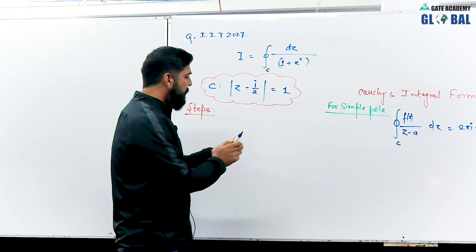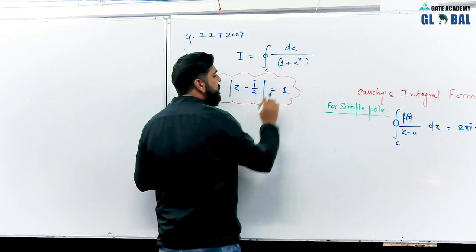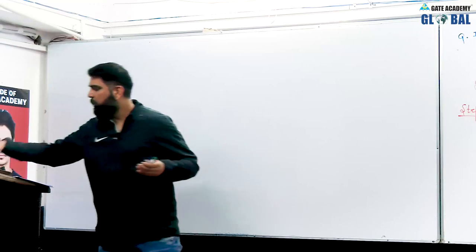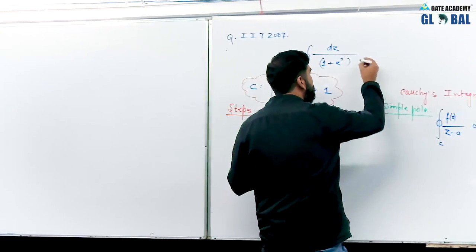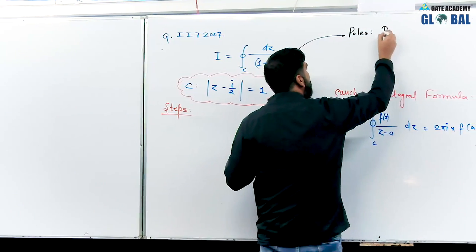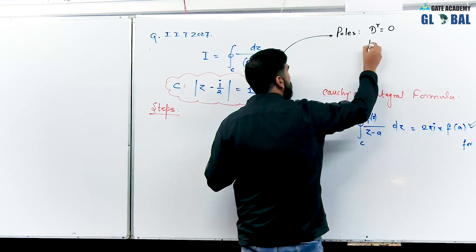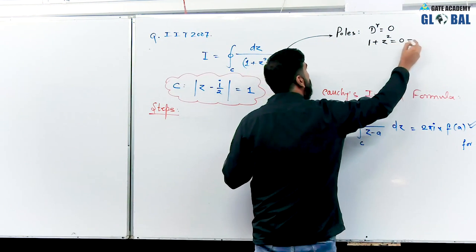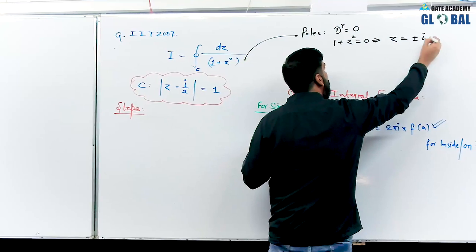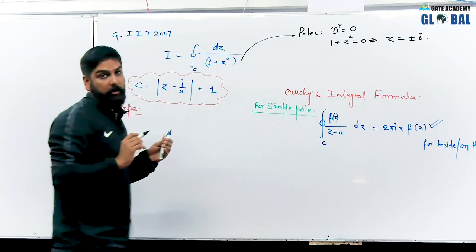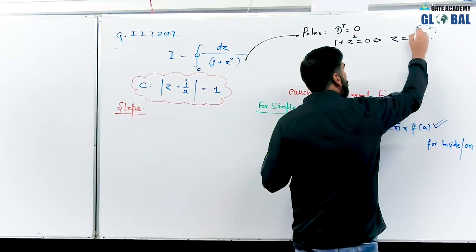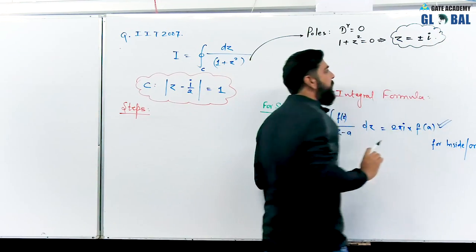Here you can see the denominator is 1 plus z square. Step number 1: find the poles. For a pole, denominator equals zero, so 1 plus z square equals 0. From here, z square equals minus 1, so z equals plus minus i — that is the imaginary unit. The real part equals zero, so this is a pure imaginary term. We have poles on the imaginary axis, that is the y-axis.